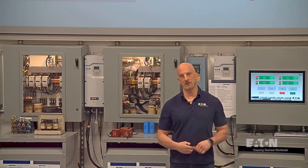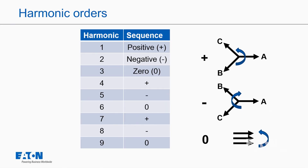Let's take a look at this slide. In this slide, we basically talk about harmonic orders 1, 2, 3, 4, 5, and 6. And then we have positive, negative, zero, positive, negative, zero — those are the sequence classifications for each harmonic order.